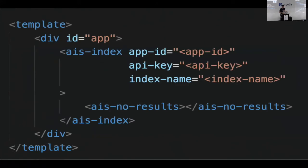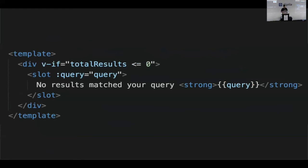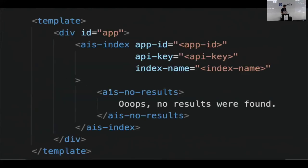How do you use that component? Very simple — you wrap it into an index component so it can access the search store, then just reference the no results component. Now the question is: how can I change that default message? And this is exactly where slots and scoped slots come in. Think of slots as placeholders where you can let your users override the default implementations. The text is wrapped in a slot, and in order to override it, users can simply provide their own version inline in the template — this overrides the default implementation. Very simple and very convenient; they don't have to create a new component.